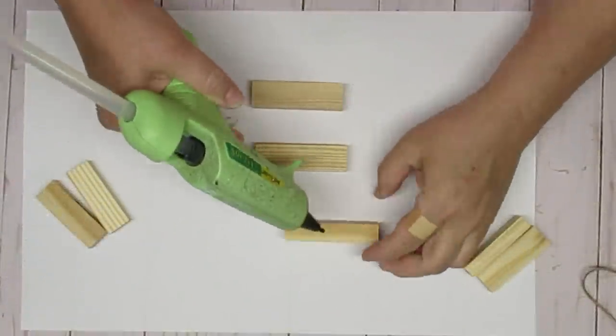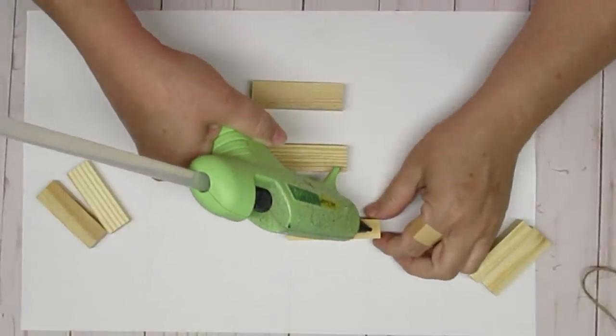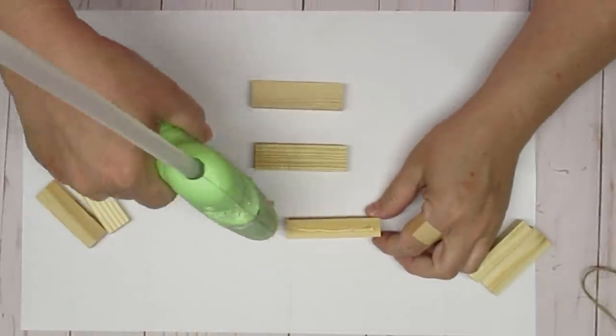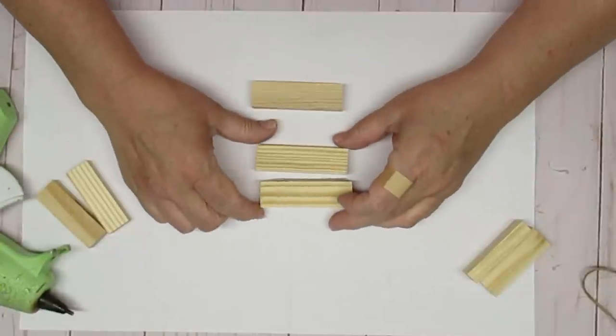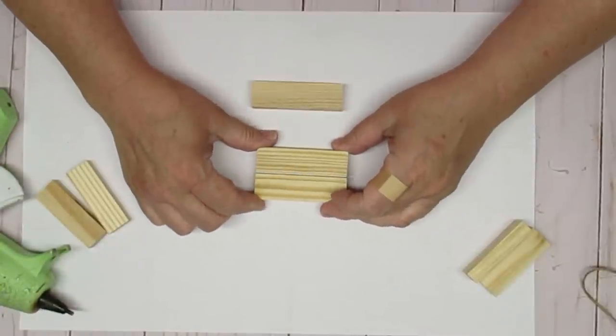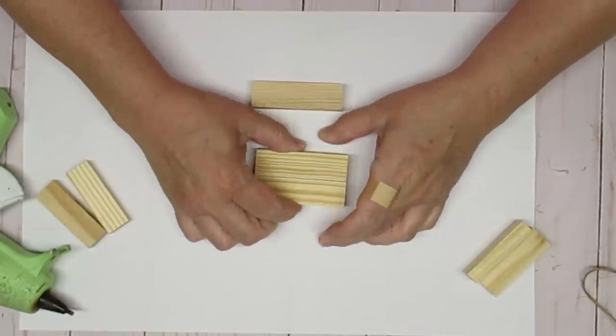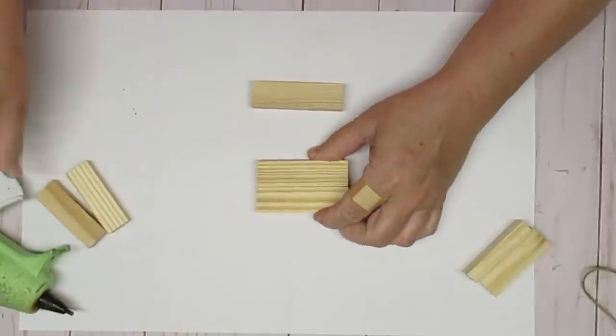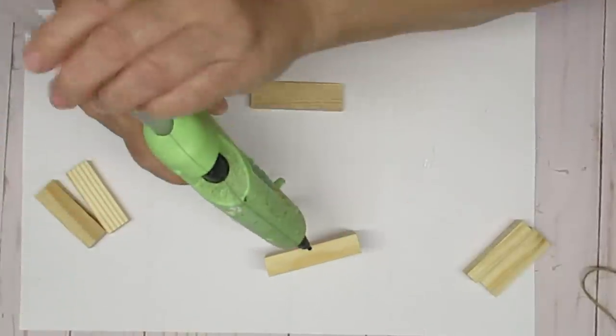For this next project it's super easy. You need seven of the tumbling tower blocks. Now you'll notice mine are a little bit bigger than what you can get at the Dollar Tree but I don't have the ability to get them at Dollar Tree anymore. They're not carrying them so I had to look elsewhere.